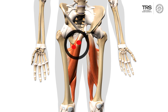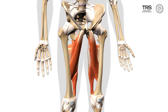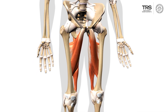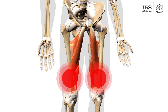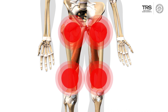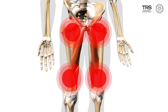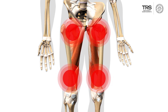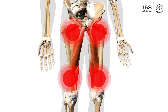The second place that these triggers refer pain to is down in the lower leg, and often there's a little bit of a join between the two referred pain areas. Again, this pattern is very similar to the pain you get from osteoarthritis of the hip.